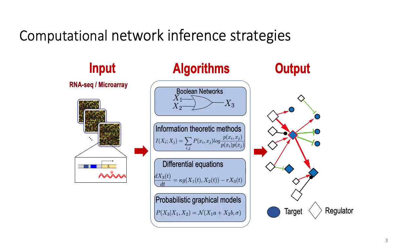There are many methods for generation of gene regulatory networks from data. Typically, transcriptomic data such as RNA-seq is provided to the GRN inference algorithm. A graph structure learning algorithm is applied to the data to produce a graph structure that connects a set of gene regulators to gene targets. There are multiple different strategies, including Boolean networks, information-theoretic models, differential equation-based models, and probabilistic or graphical models. The output of such a model can then be used to try and predict novel gene targets for further study.